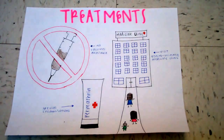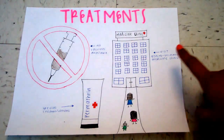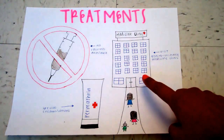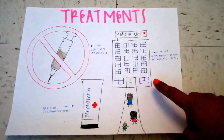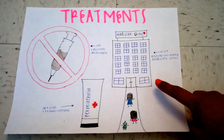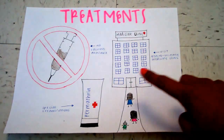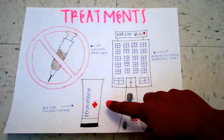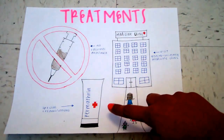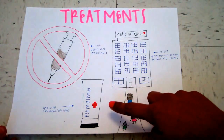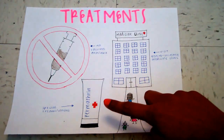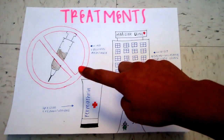Treatments. Scabies is treated if you go to a general or urgent medicine clinic. There are also special creams and lotions like Permethrin. There are no known vaccines for scabies.